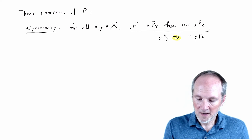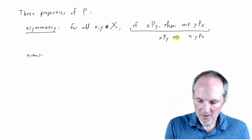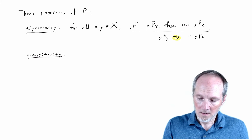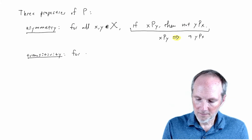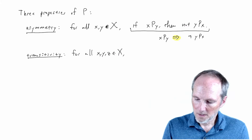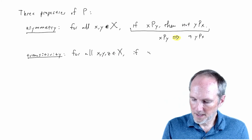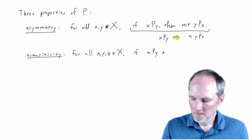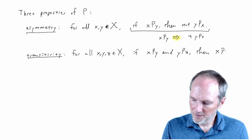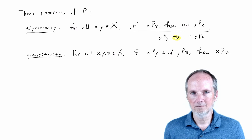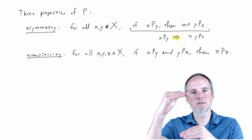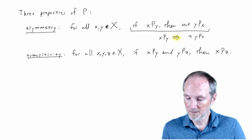Another property that's pretty intuitive is called transitivity. This says: for any three possible choices x, y, and z, if x is preferred to y and y is preferred to z, then x is preferred to z. If you think about a ranking, this is really intuitive: if x is above y in the ranking and y is above z, then x is above z too. That's all this says.